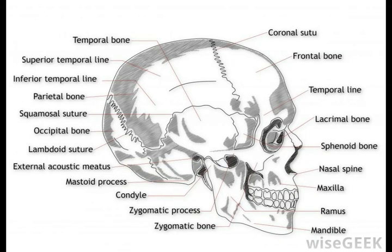The mandibular condyle is a rounded projection at the end of the lower jaw, or mandible. This particular part of the lower jaw articulates, or unites, with the skull. It is actually better known as the condyloid process, which refers to the condyle itself and another part of the lower jaw.